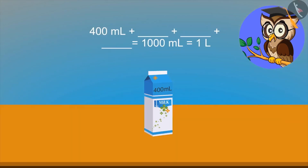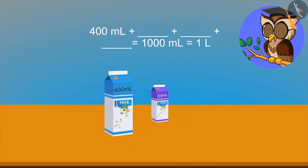See this. We have 400 ml of milk. We need 1,000 ml or 1 liter milk. Now look. These are the packets of 200 ml, 300 ml and 400 ml. Which three identical packets will combine to make 1,000 ml?